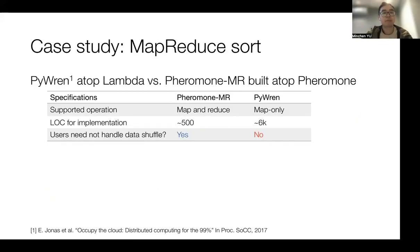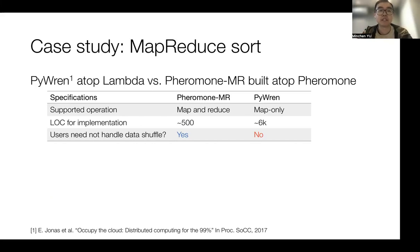We also evaluate MapReduce as a case study. In our system, we can easily enable MapReduce backed by the dynamic group primitive. We built a MapReduce framework atop Pheromony called FamilyMR. We compare FamilyMR with Pyram, which is built atop Lambda and enables large-scale MapReduce operations. Thanks to the efficient support of Pheromony, our system only needs about 500 lines of code, while it takes 6,000 lines of code for Pyram running large-scale MapReduce on Lambda. In addition, Pheromony relieves users from handling data shuffle.